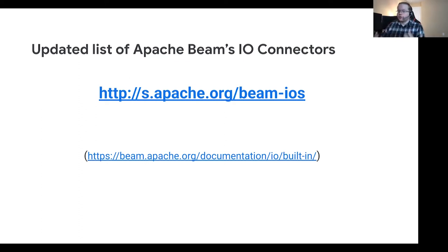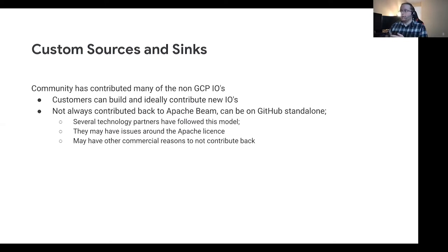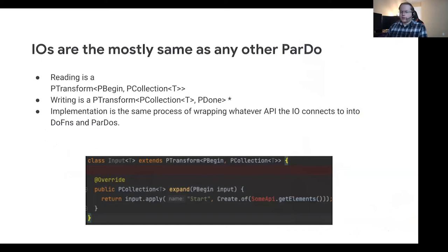This is a quick overview of what already exists, and as I mentioned, the community has contributed a large number of the non-Google Cloud IOs and frequently they are committed back, but not always. What I'd like to talk about now is what writing an IO actually looks like — because unlike most transforms, these don't start with a PCollection and don't necessarily output a PCollection, because they will be either reading or writing as a side effect.